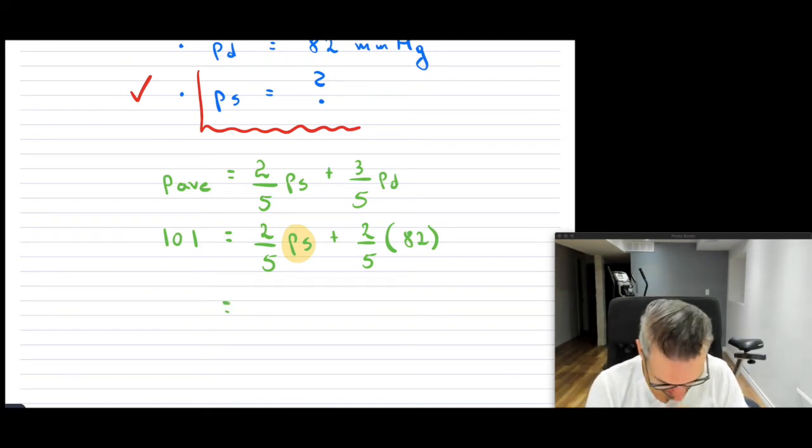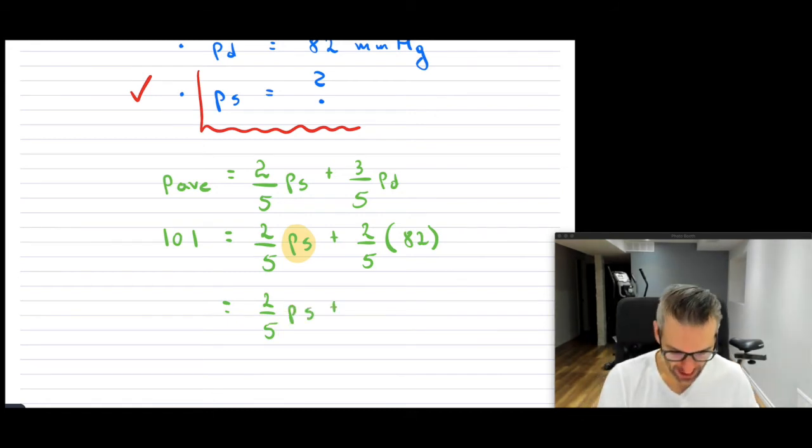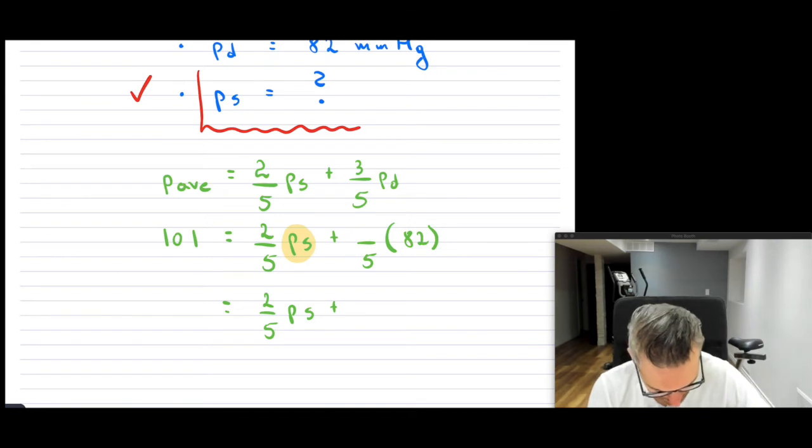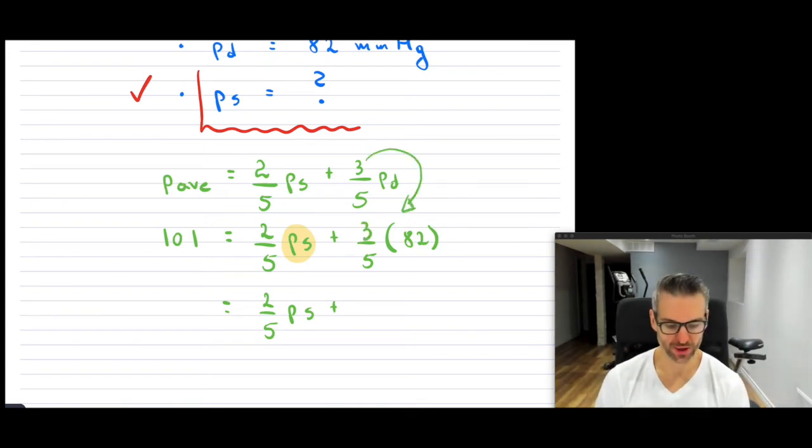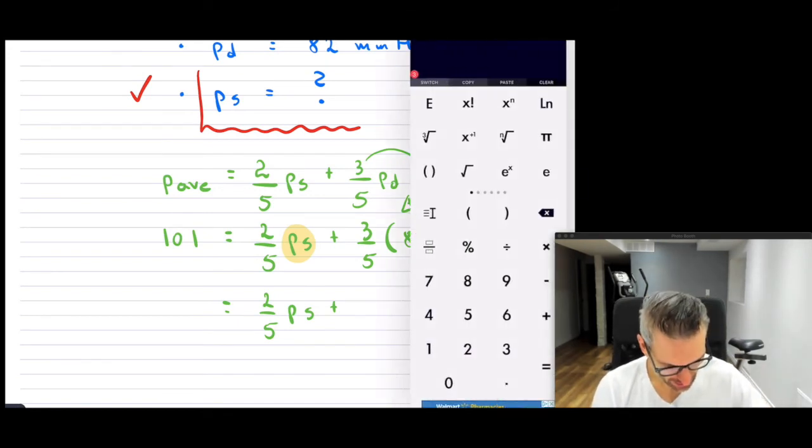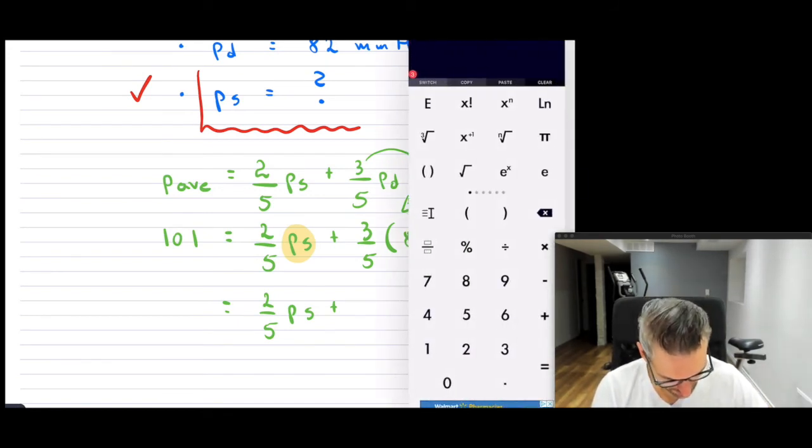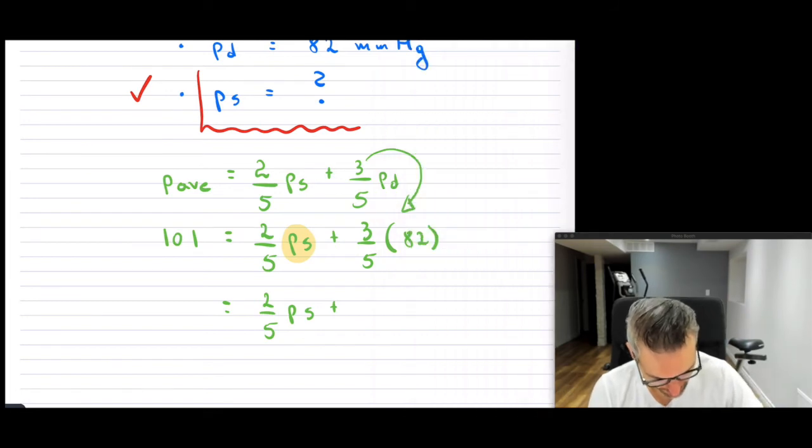So two over five, I'm going to leave it as it is. I apologize, I noticed right here this should have been three, because that's three. So three over five times 82. Let's do that. So this is going to be three times 82 divided by five. So that's 49.2.